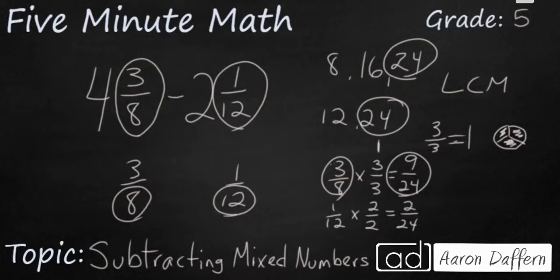So now I can rewrite my problem as 4. I'm going to bring my whole numbers back in because I can't forget those. 4 and 9 twenty-fourths minus 2 and 2 twenty-fourths. And now we simply subtract the fraction. So 9 twenty-fourths minus 2 twenty-fourths is going to make 7 twenty-fourths. And we subtract our whole numbers. 4 minus 2 is going to make 2. So our answer is going to be 2 and 7 twenty-fourths.